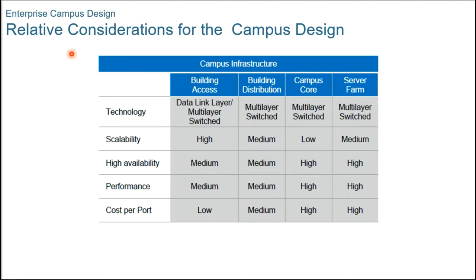Let's start with the relative considerations for campus design, or the enterprise campus requirements. As shown in the table, each enterprise campus module has different requirements. For example, this table illustrates how modules located closer to users require a higher degree of scalability so that the campus network can be expanded in the future without redesigning the complete network. Adding new workstations should result in neither high investment cost nor performance degradation. End users in the building access layer usually do not require high performance or high availability, but these features are crucial to the campus core layer and the server farm module.